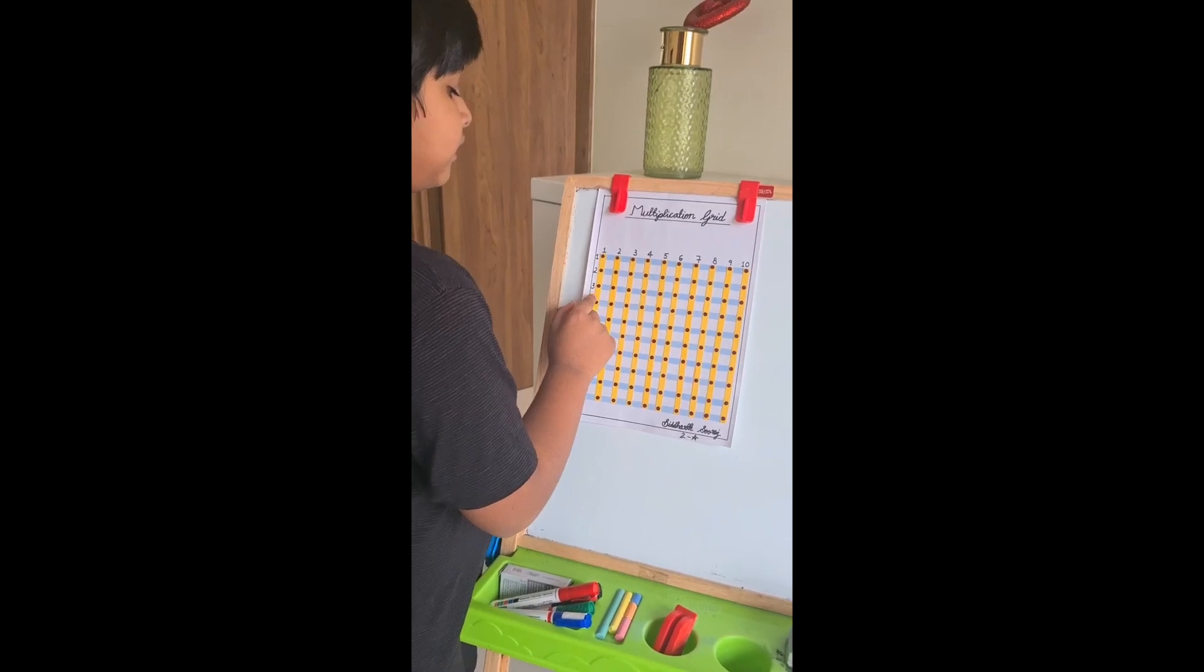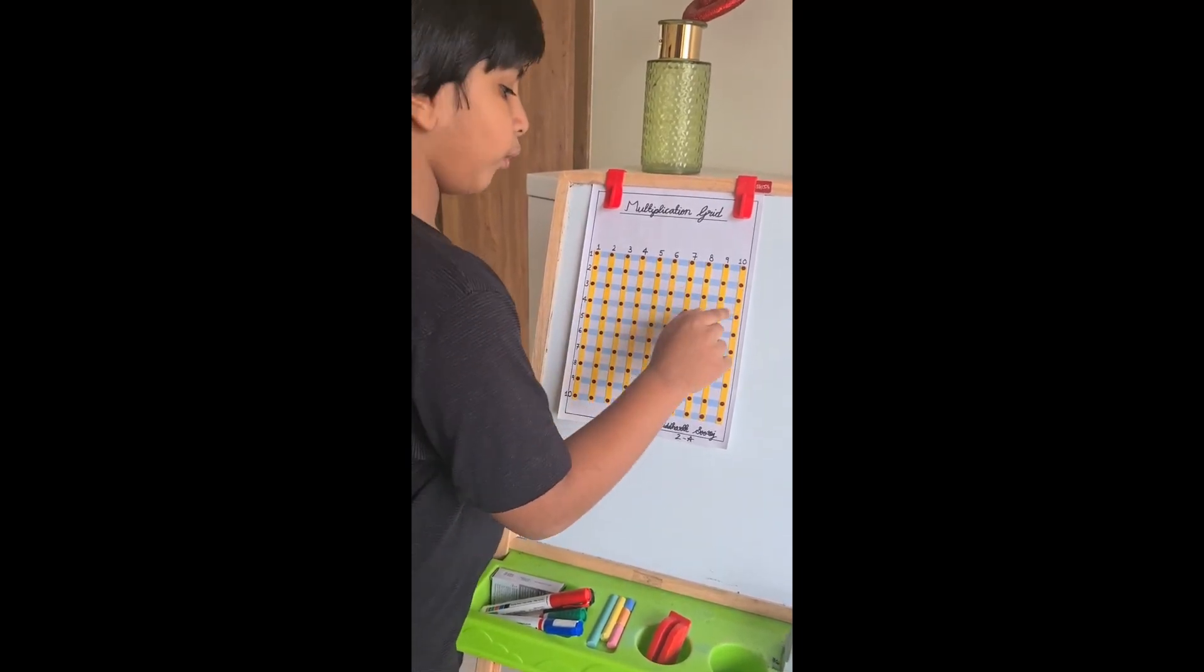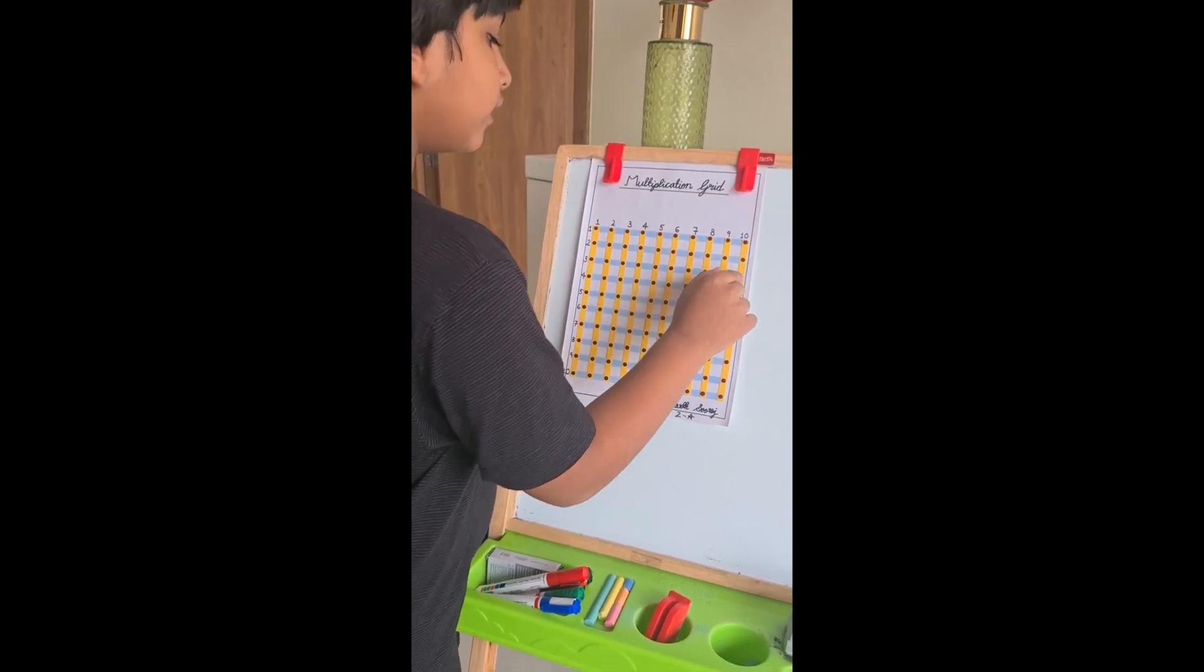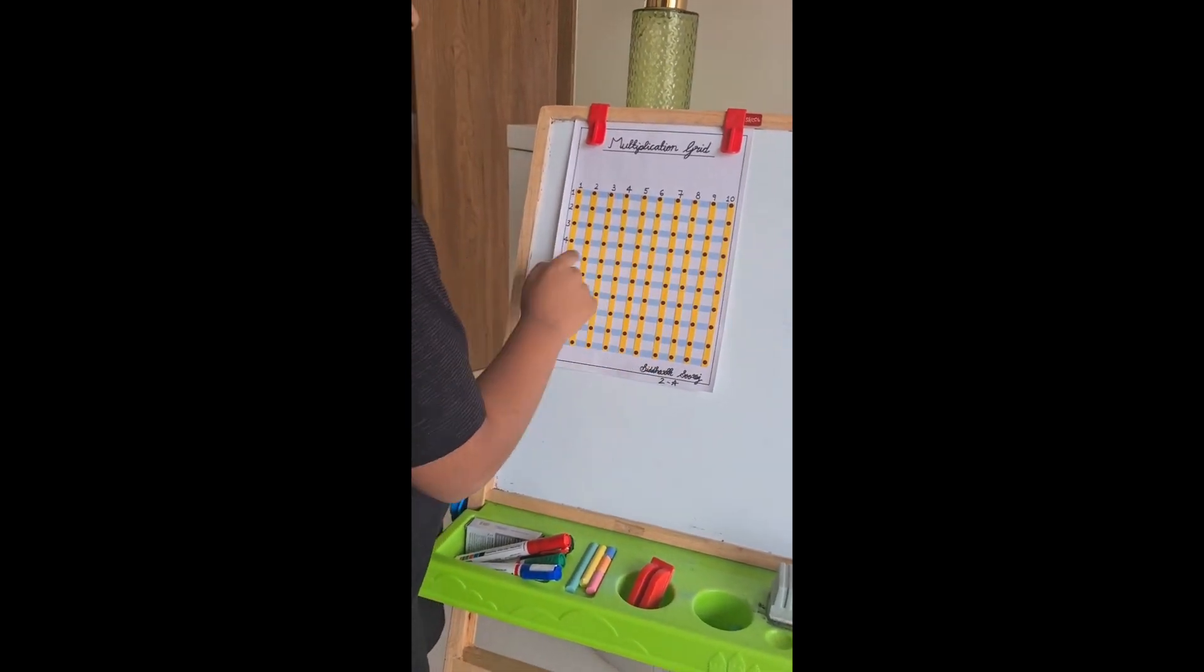Similarly, in the third row, there are 10 more bindis. So, 10 times 3 equals 30.